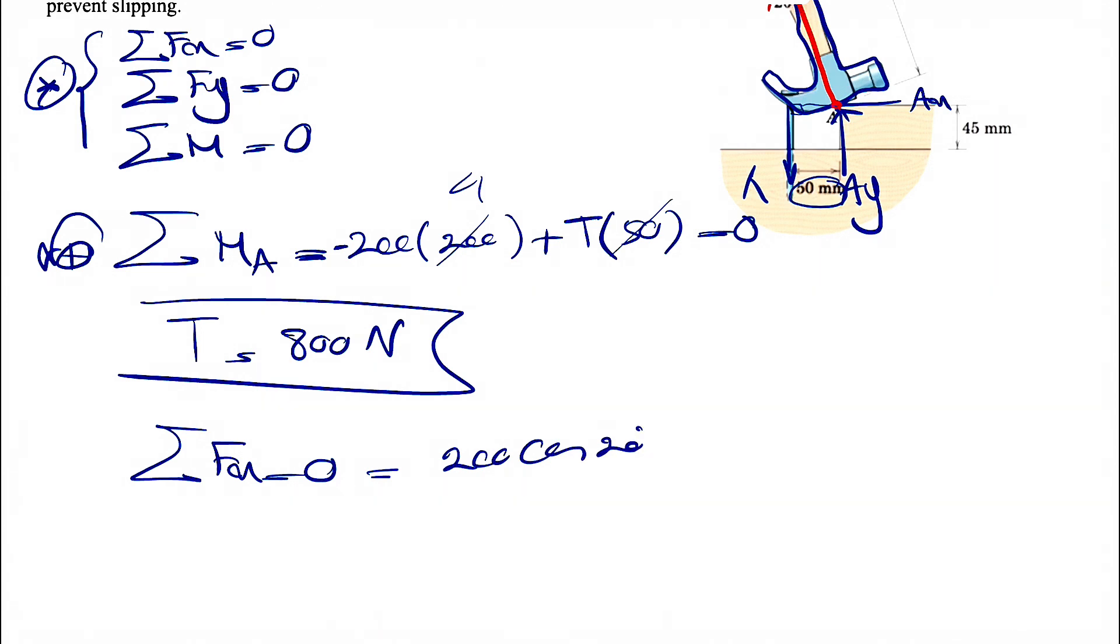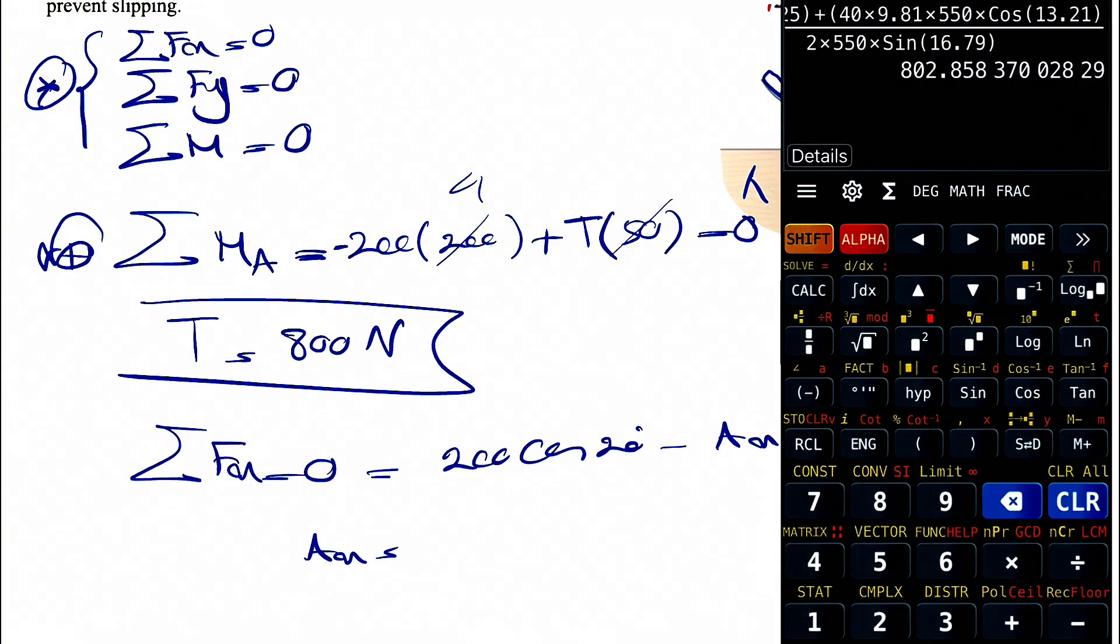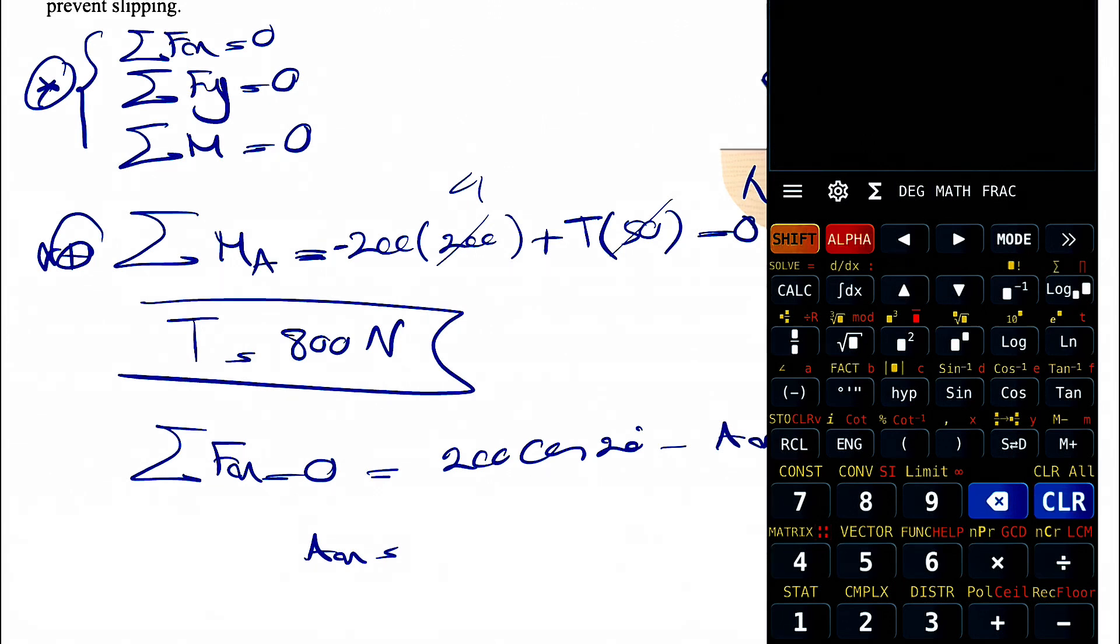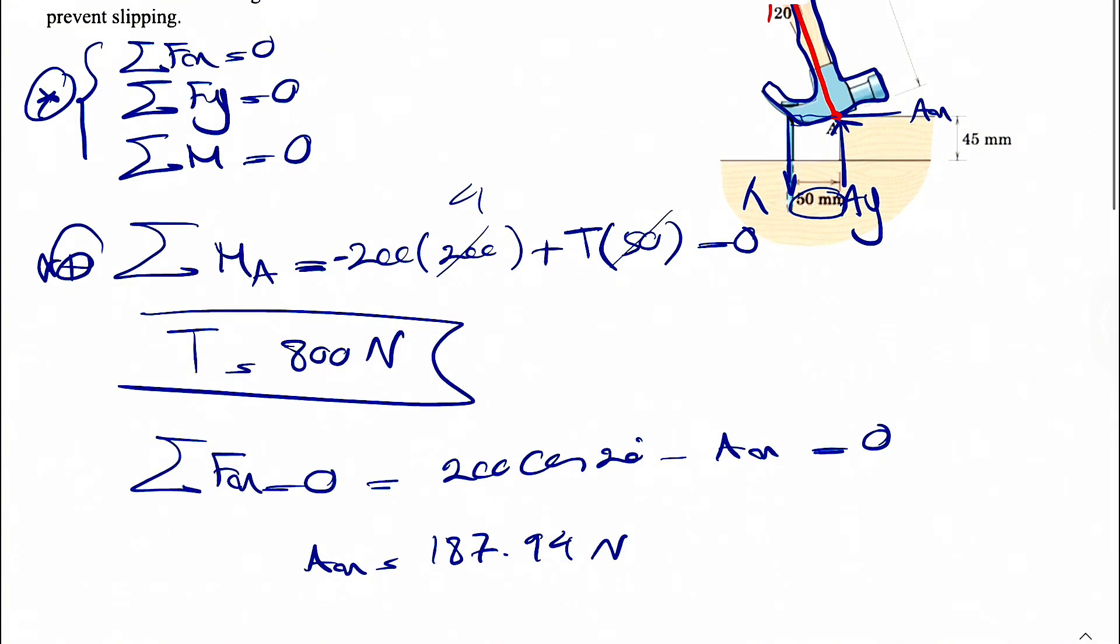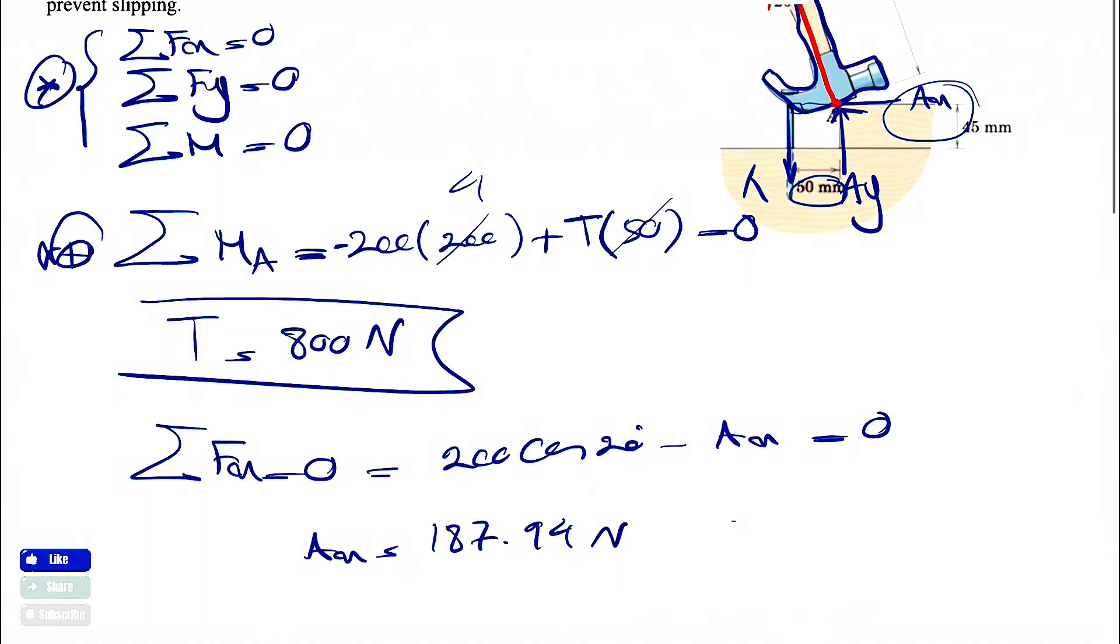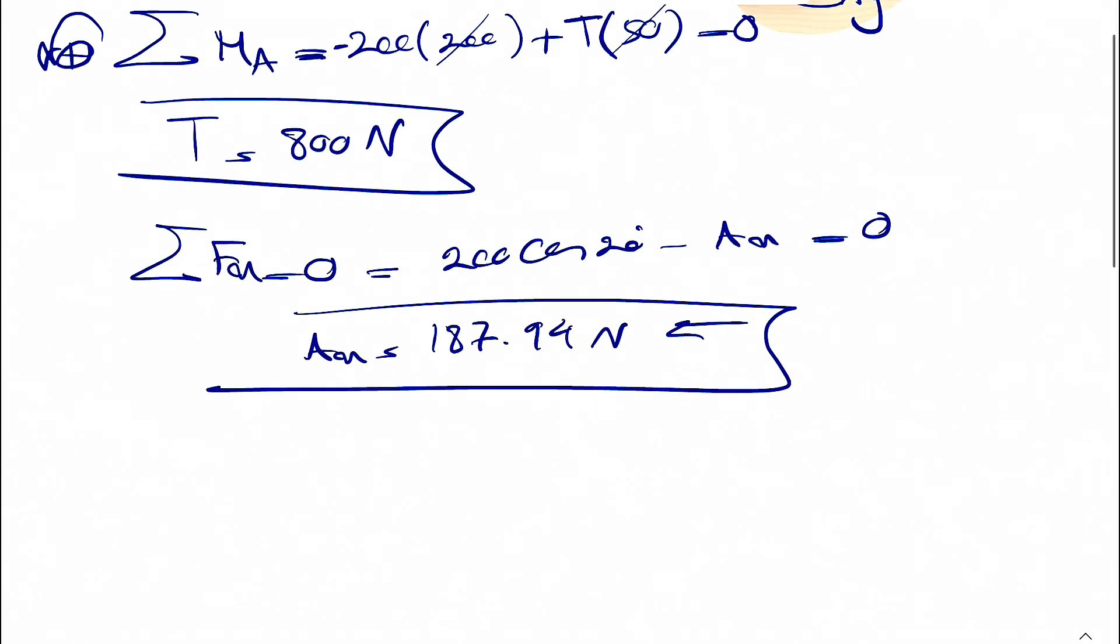So 200 cosine of 20 degrees minus AX equals zero. So AX would be 200 cosine of 20. Let's just see what we get. That's going to give us 187.94 newtons. We did not get a negative sign, so that shows our assumption at the beginning for AX to the left was correct.